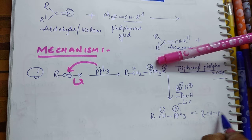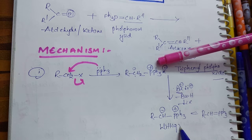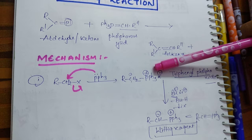This is called the Wittig reagent. This Wittig reagent reacts with carbonyl compounds like aldehydes and ketones.